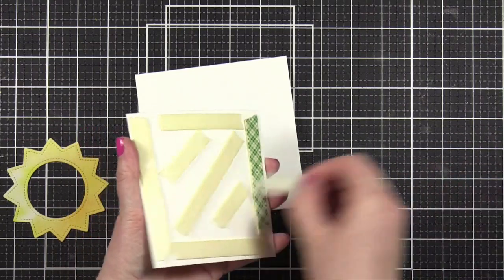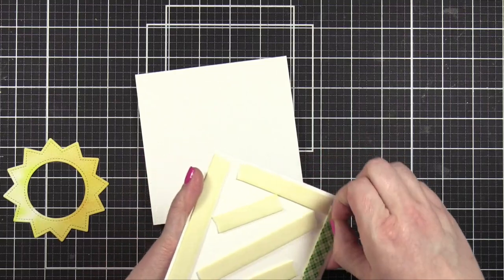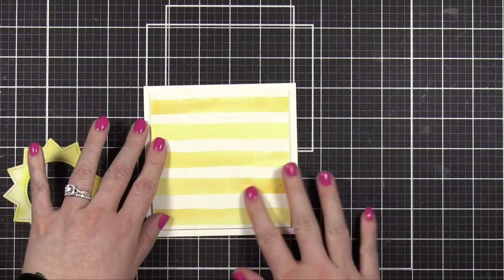I put foam adhesive on the back of the striped watercolor panel, and then press that directly down onto the front of my card.